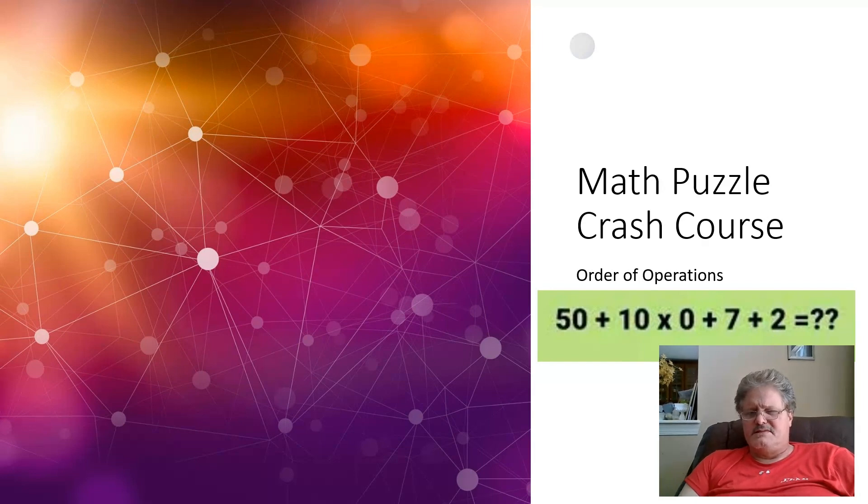A lot of people are trying to add 50 plus 10. They're ignoring the order of operations. I want to step through this one really quick. I've got some better videos that go into more detail on the order of operations, but I wanted to spend a few minutes here on this.